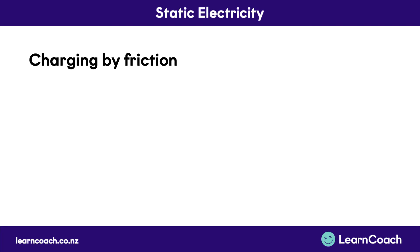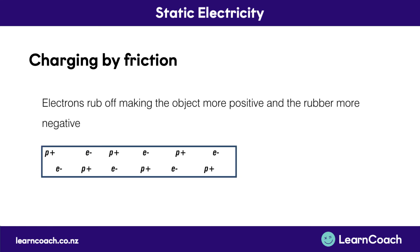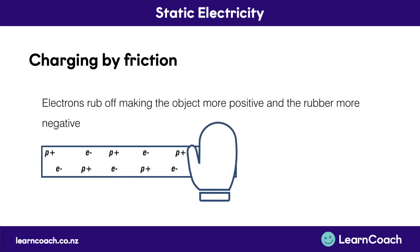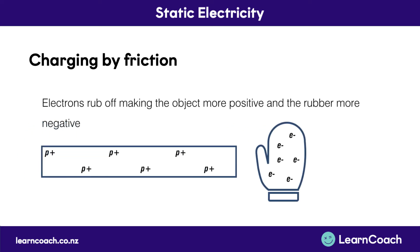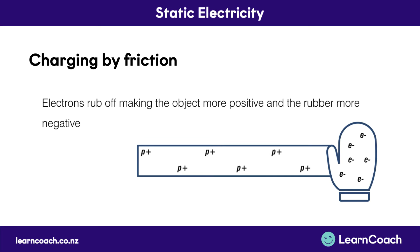Now we're going to talk about charging by friction. This is when electrons rub off, making the object more positive than the rubber, or the thing that's causing the friction, more negative. You can see here we've got a pipe that is neutral — it's got the same amount of positive charges as it has negative charges. The rubber is rubbing the pipe so much that the electrons come off. Now the glove is negative and the pipe is positive, so if we move the glove away, the pipe will be attracted to it. This is due to charge separation — opposite charges attract.